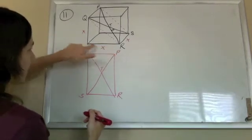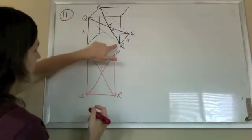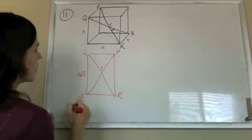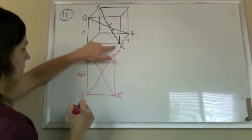I know if this is X and this is X, then this must be X root 2. It's a 45-45-90 triangle. You can do Pythagorean theorem also, it'll get you there.